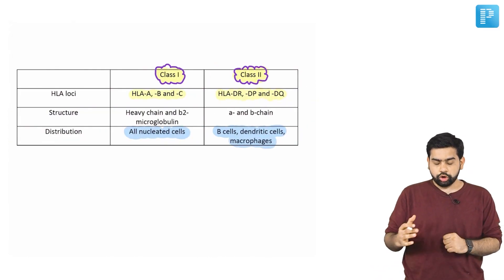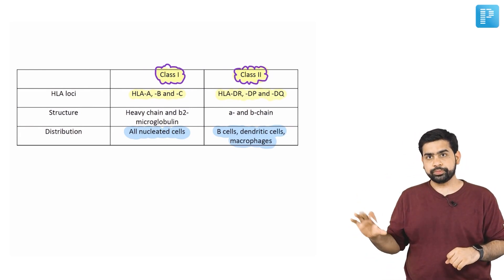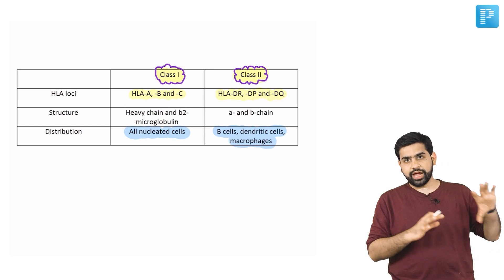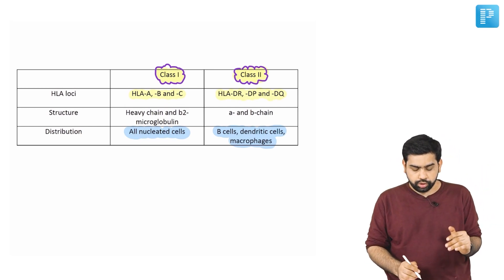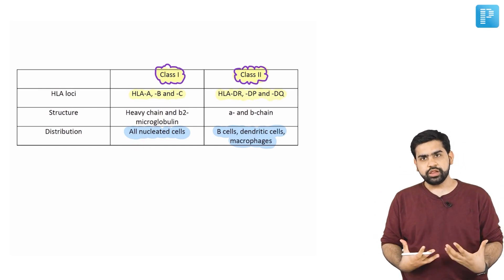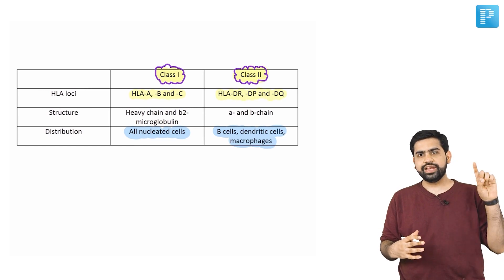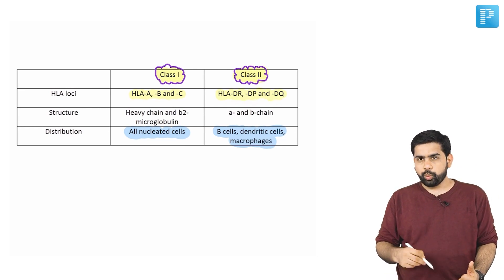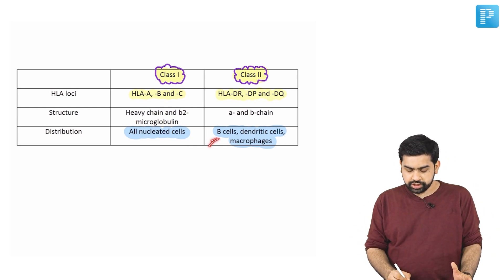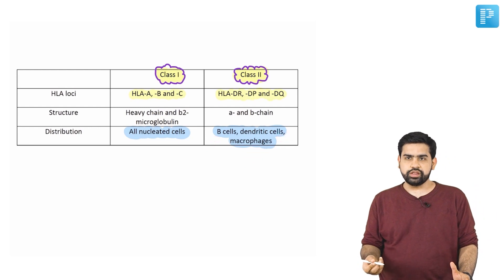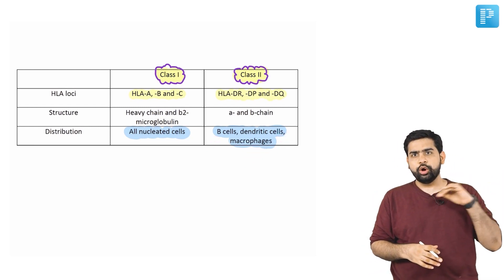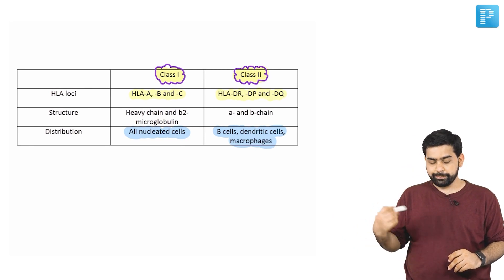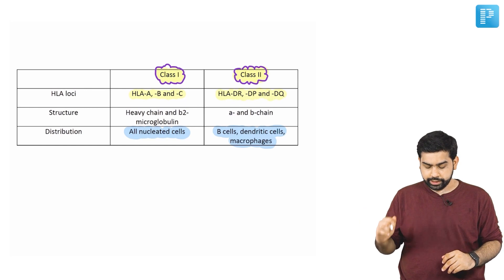HLA antigens can be Class I or Class II. Class I includes HLA-A, B, and C, and is located on all nucleated cells in the body. Class II includes HLA-DR, DP, and DQ, and these are situated on B cells, dendritic cells, and macrophages.